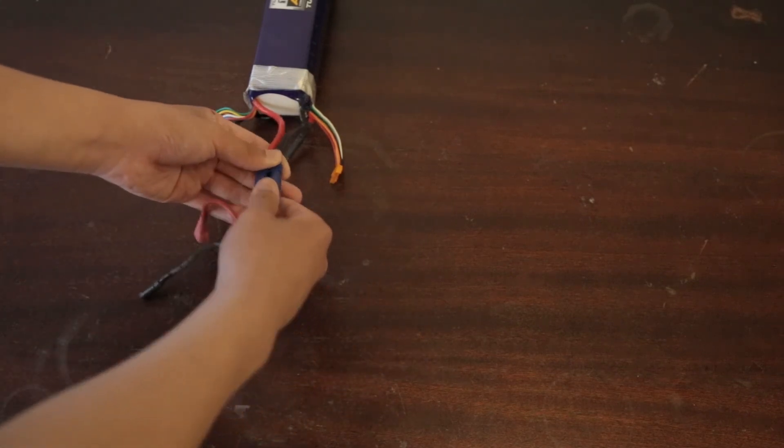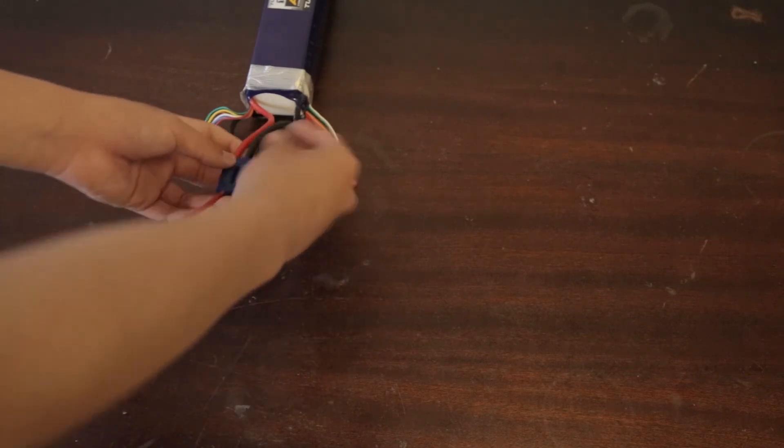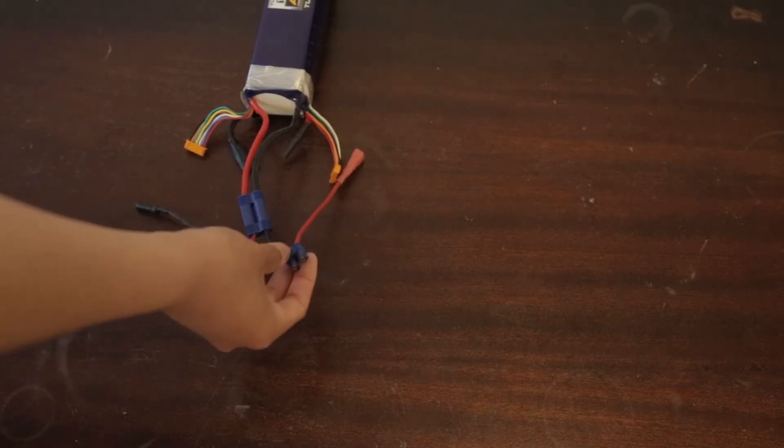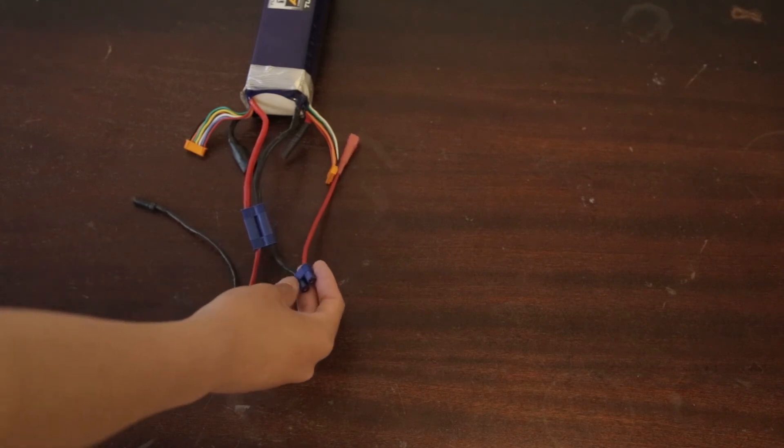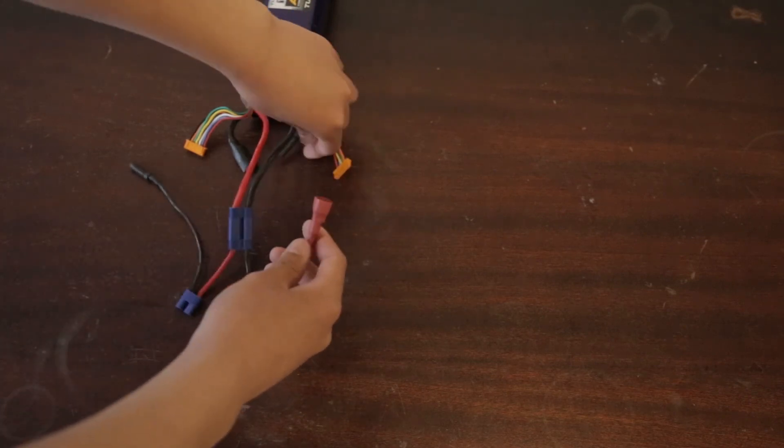And simply plug this into here, which gets the negative of this side and sends it to this EC3. I'm using an EC3 and not an EC5 because EC3s are good enough for charging.